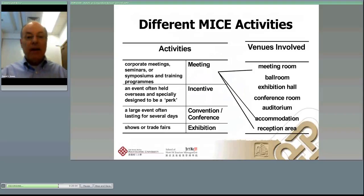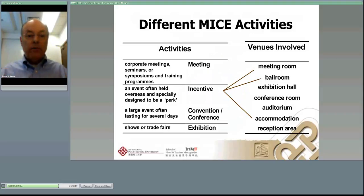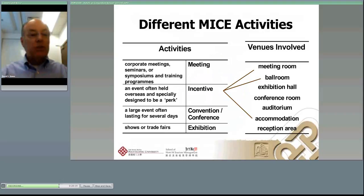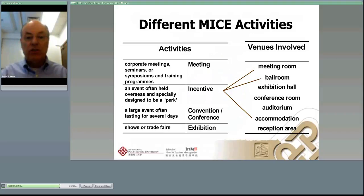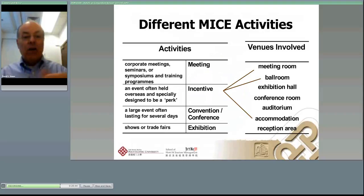An incentive meeting is a little different — the people are rewarded for having produced in some fashion: sold to a certain level, maintained a turnover rate in human resources, produced a certain number of products, whatever it might be. They've won an incentive event, essentially a trip or a perk. The incentive might need a meeting room but not very much — they probably need a ballroom for the big meal functions and the award celebrations. These are the bread-and-butter business for hotels as convention venues.